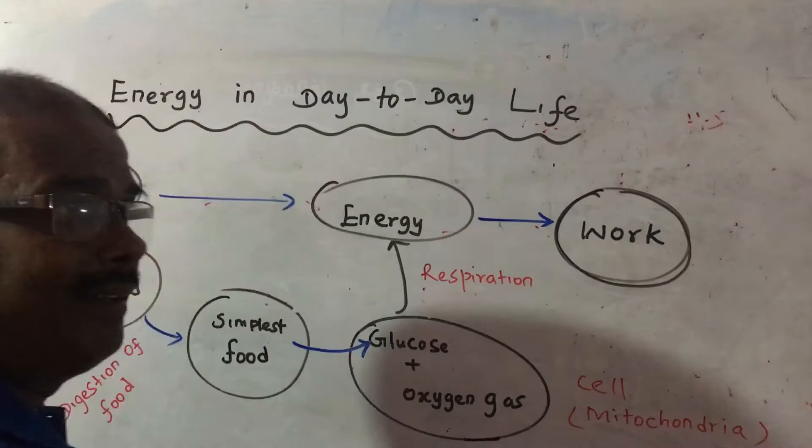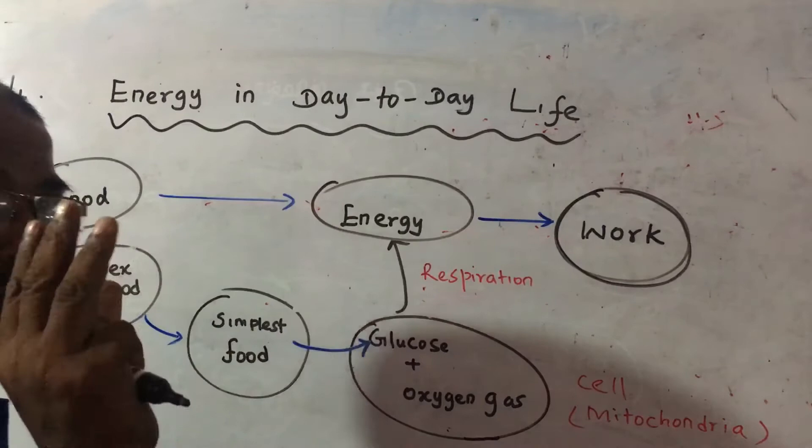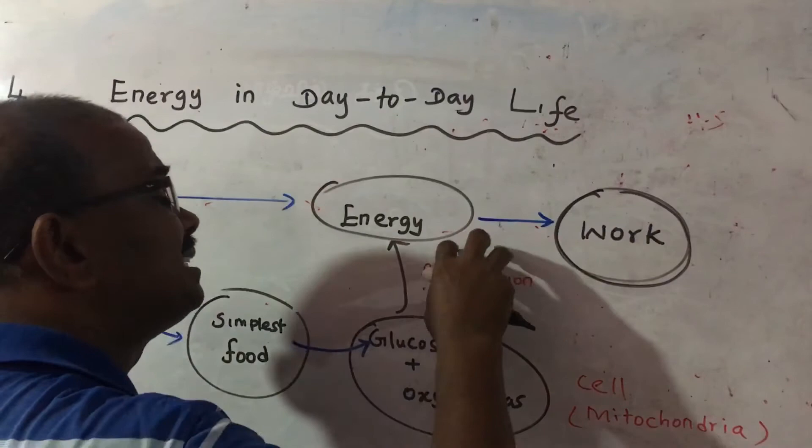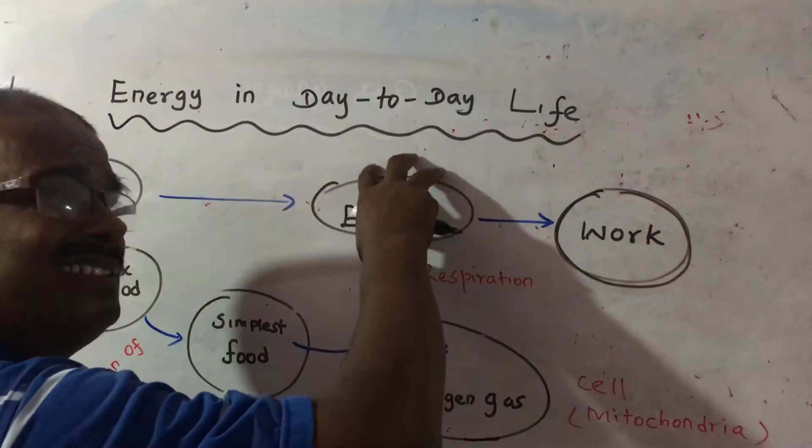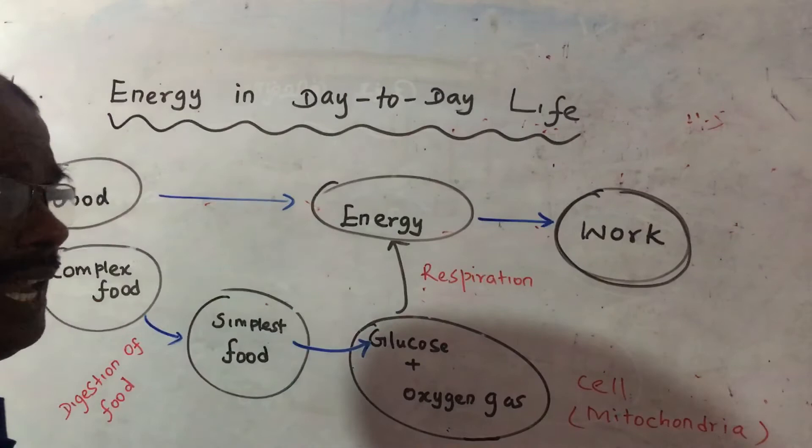In this instance, energy is produced. This process is respiration. It occurs in the cell. That's why we call this cellular respiration. By using this energy, we do many works in our day-to-day life. Energy is the ability to do work.